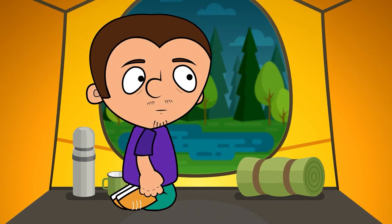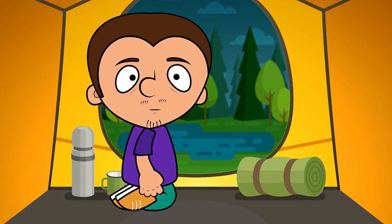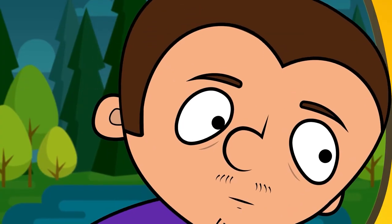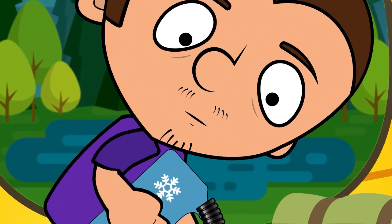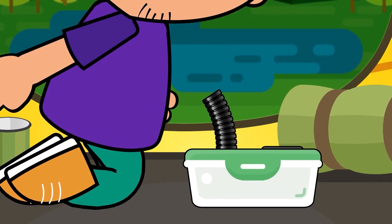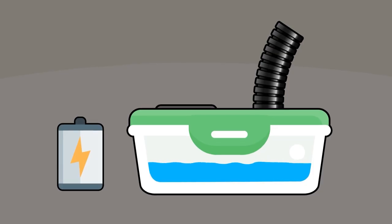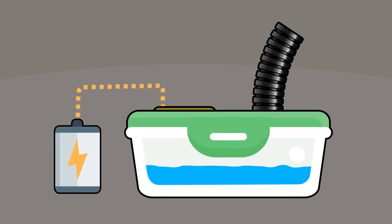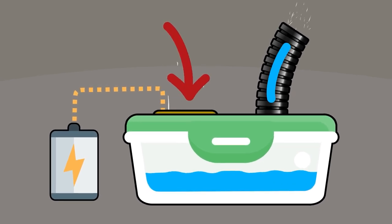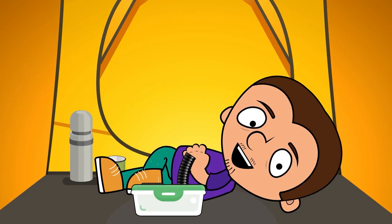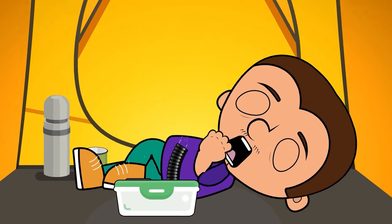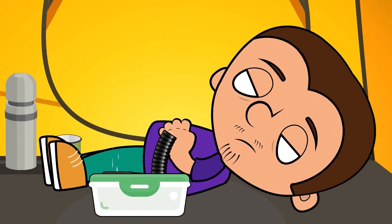Wow, it got dark really quick. I think it's time for bed. So bring the container with the fan, the one we made at home. Add some cold water from the ice bucket. Now close the container and plug the fan to your portable battery. Your homemade AC system is ready. It will keep the air cold and humid inside the tent, so you will sleep like an angel. Sweet dreams, Tony.